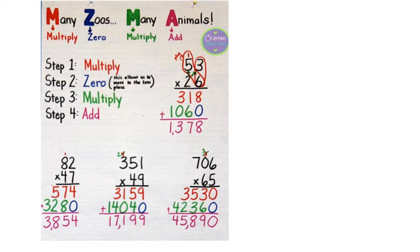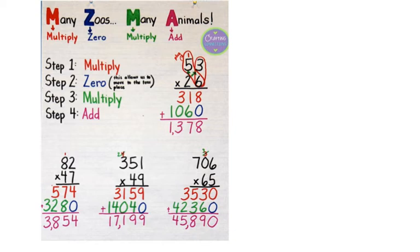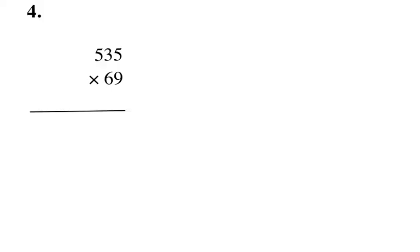When you start with a two-digit number on the bottom — a two-digit times two-digit or two-digit times three-digit — there are going to be a few more steps. We can use the acronym 'Many Zoos Many Animals' to help us remember: first, multiply the ones column by all the numbers on top; then add a zero; then multiply the tens column by all the numbers on top; and finally add those two results. Here are some examples. Remember our acronym: many zoos, many animals.